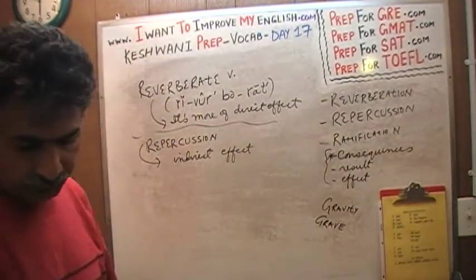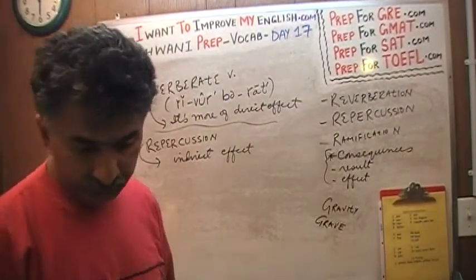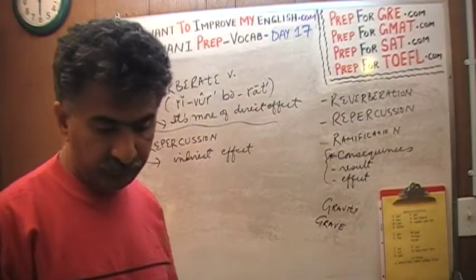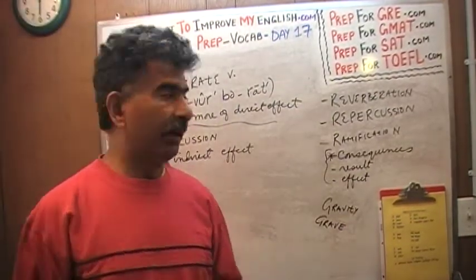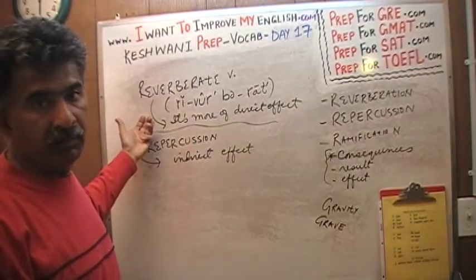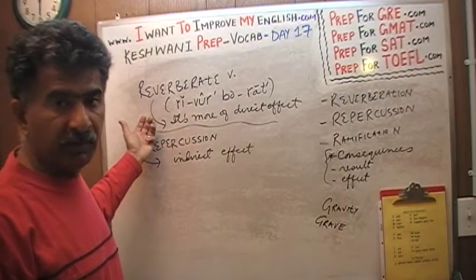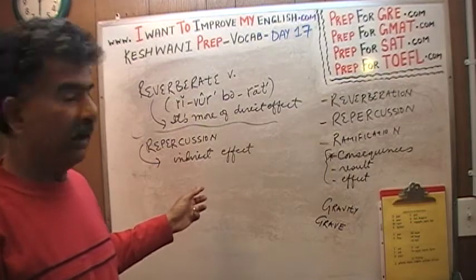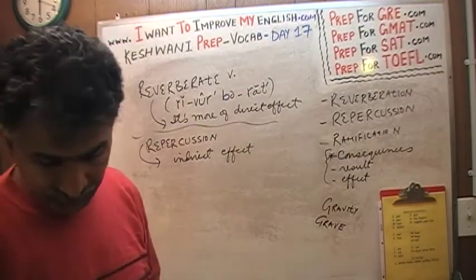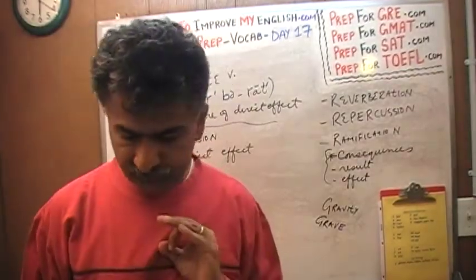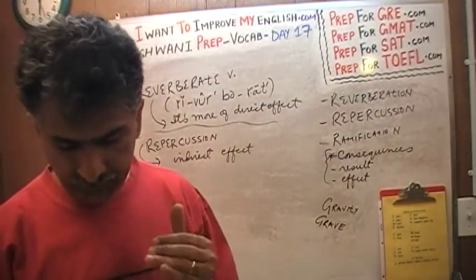Let me give you an example. If I don't go to work today, I will get fired. Well, the 'getting fired' part is the reverberation — the direct effect. And if I get fired, I won't be able to pay my rent, I won't be able to pay my car payment, I'll lose my apartment and my car — those are the repercussions, the indirect effects. You don't have to be this nitty-gritty about it, but that's the difference: one is the direct effect, the other is the indirect effect.